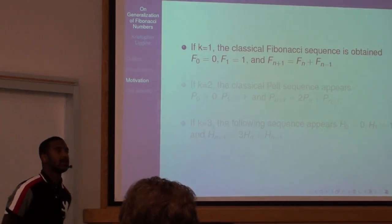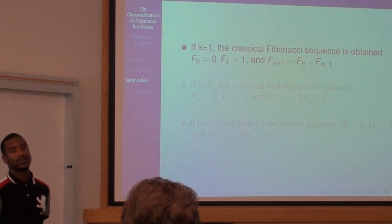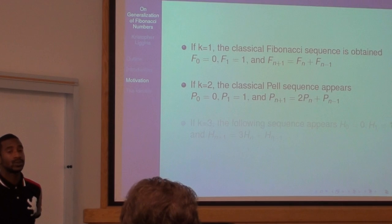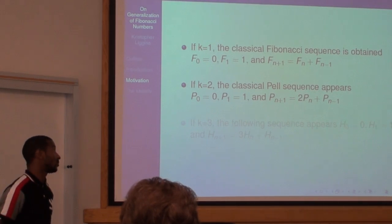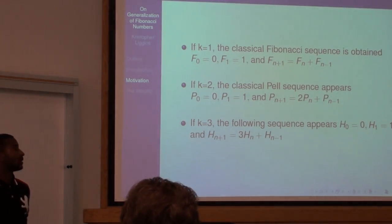Also, with the k-Fibonacci numbers, if you take k equal one, you will find that you get the classical Fibonacci numbers. You take k equal two, you get the Pell sequence. You take k equal three, then it will reveal the sequence H_n+1 equals 3H_n plus H_n-1.